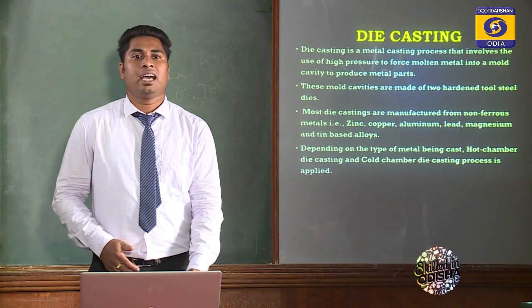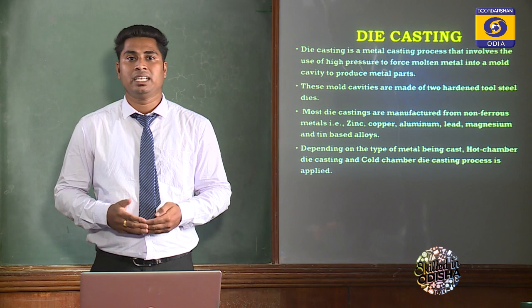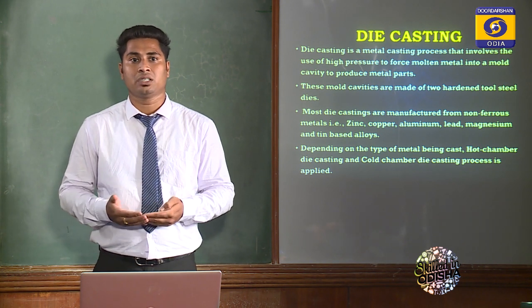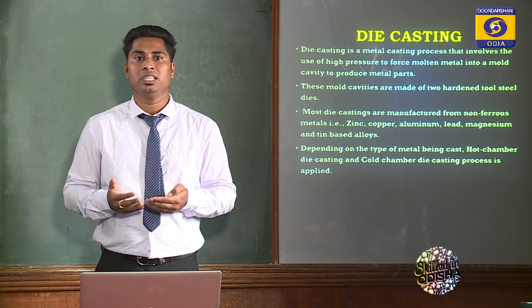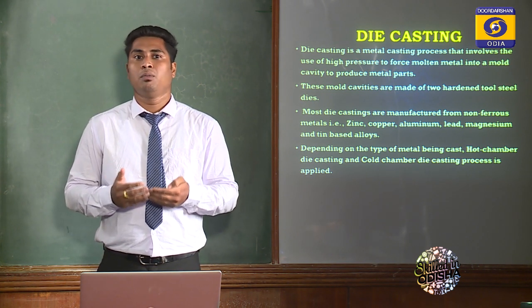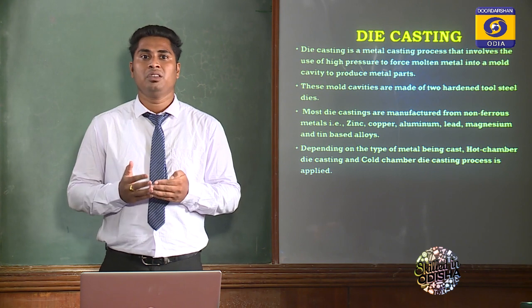Die Casting Process uses very high pressure to fill the mold cavity using molten liquid metal or molten alloy. Remember the key term: die casting uses very high pressure, which is used to fill the mold cavity by molten liquid metal or alloy.